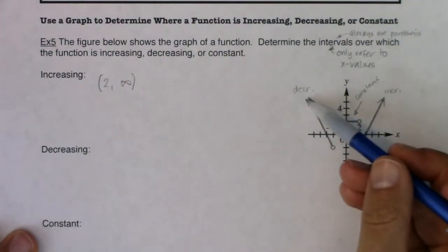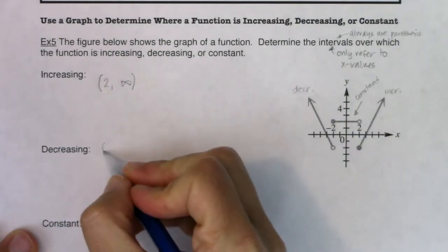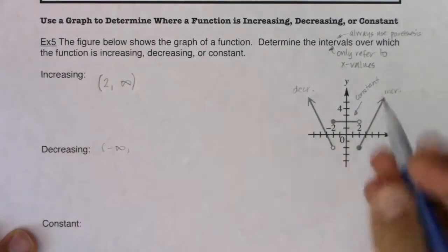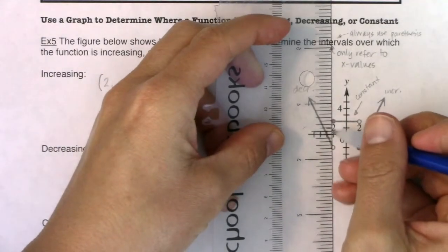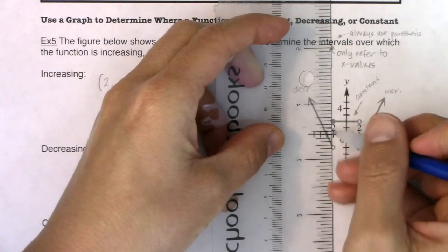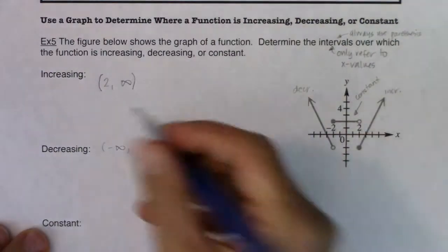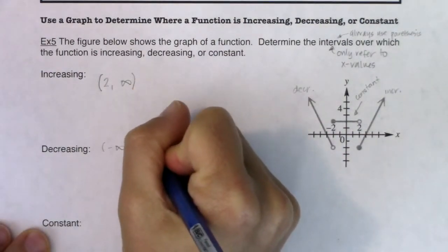For decreasing, it was here. Now, again, this is left forever. So I'm going to start this at a low of negative infinity. And then I only care about the x coordinate. I was decreasing until my x coordinate of negative 2.